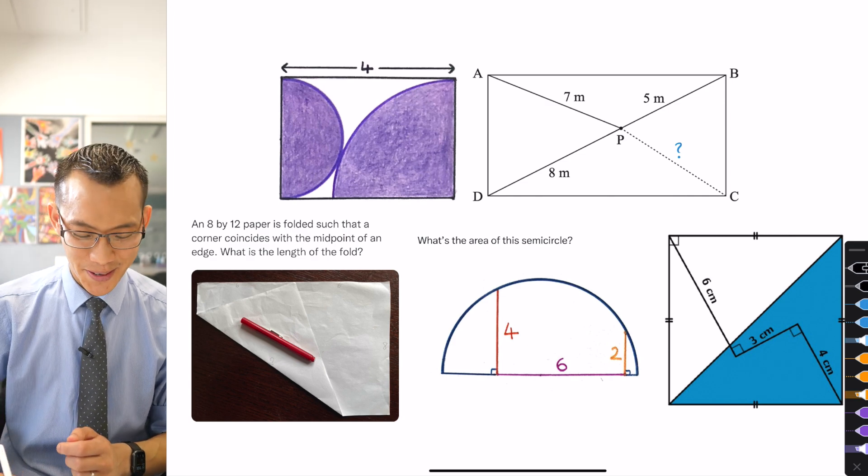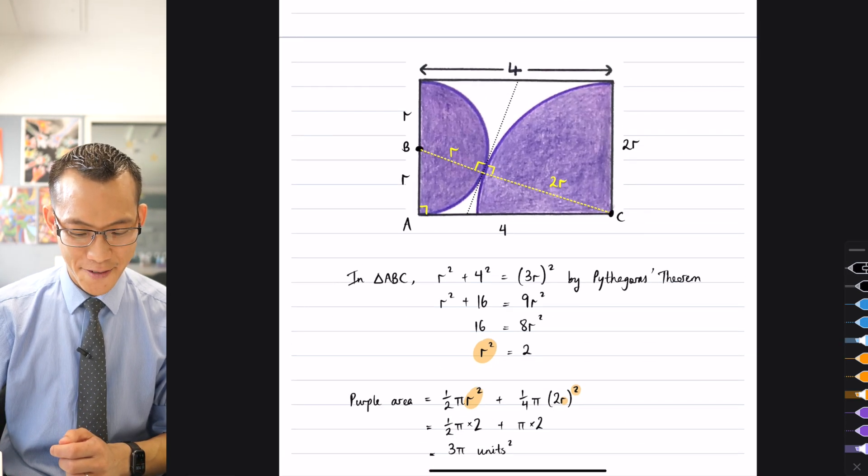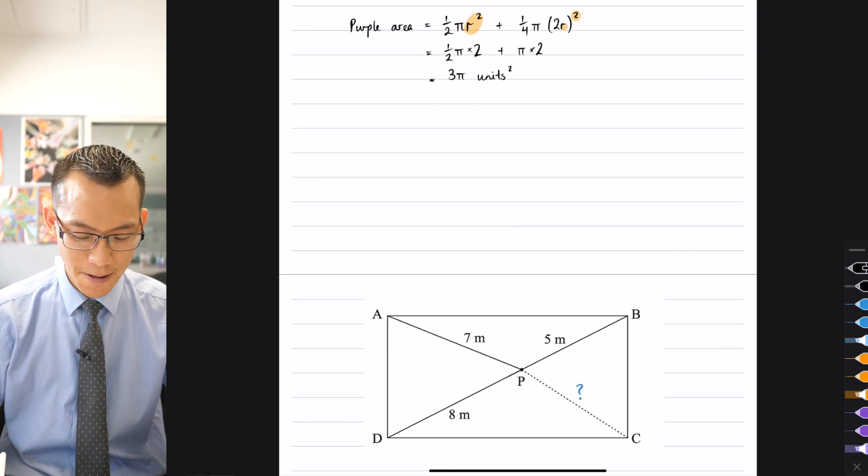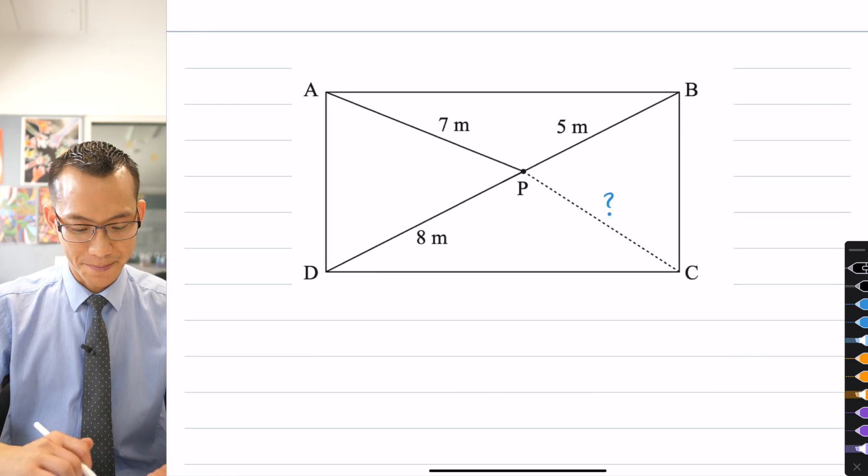All right, so that was the first one. Area of these two figures combined together within this rectangle.